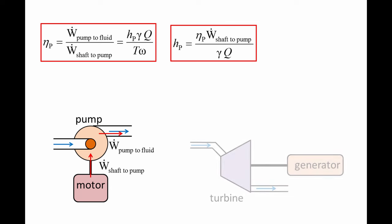The purpose of the turbine is to extract mechanical energy from a flow. Interactions between the fluid and turbine transfer power from the fluid to the turbine, causing a shaft to rotate.